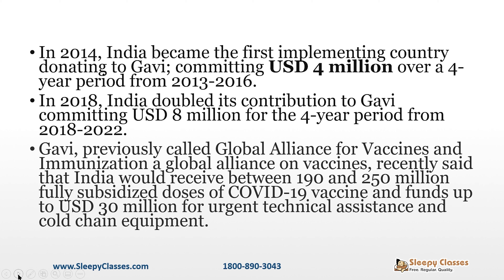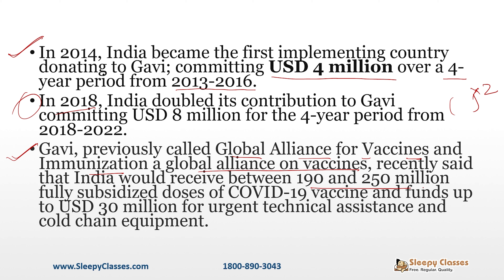अब बात करें GAVI की — Global Alliance for Vaccines and Immunization. India 2014 में was the first implementing country जिसने 4 million dollars donate किए, 4 years for 2013 to 2016. 2018 में India ने अपना commitment double कर दिया. जब India को जरूरत पड़ी, तो GAVI has come forward and said India would receive fully subsidized COVID vaccines and funds for urgent technical assistance and cold chain equipment. This is the example of India helping the world out and world giving it back.